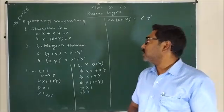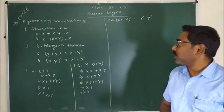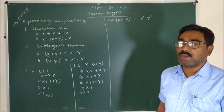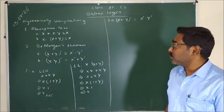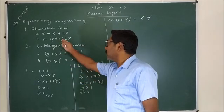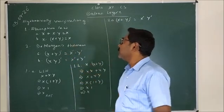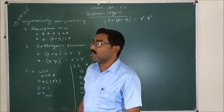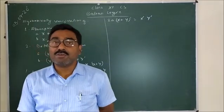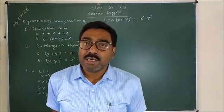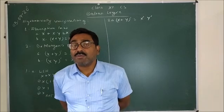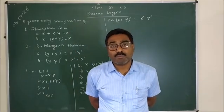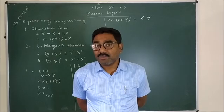The first theorem is Absorption Law, that is x plus x·y is equal to x, and x·(x plus y) is equal to x. The second one is De Morgan's theorem, that is (x plus y)' is equal to x'·y', and (x·y)' is equal to x' plus y'.